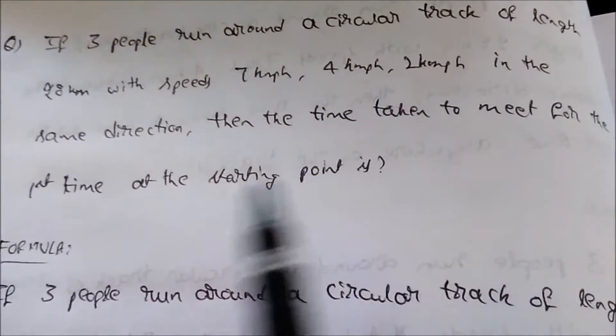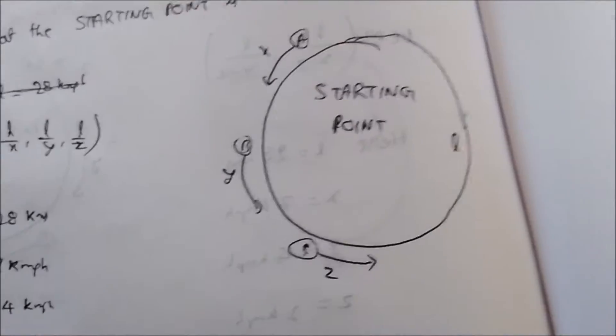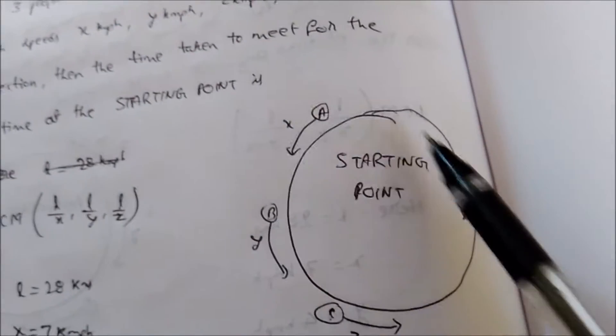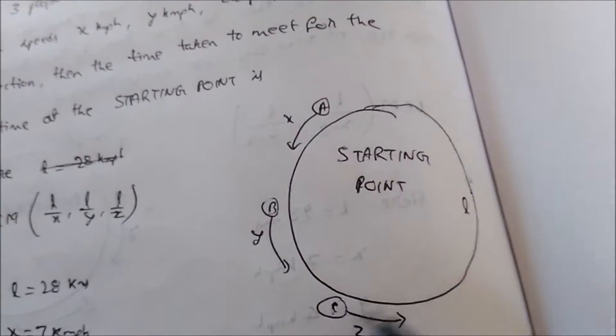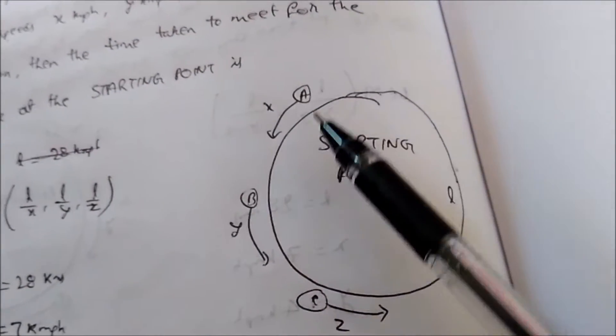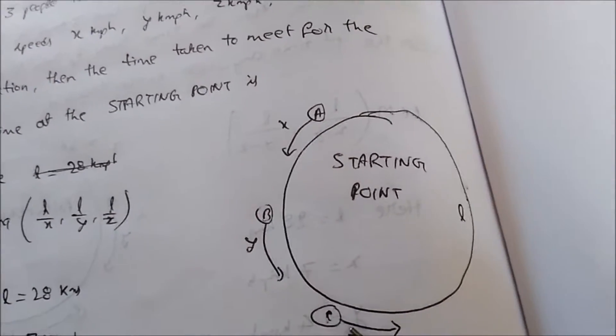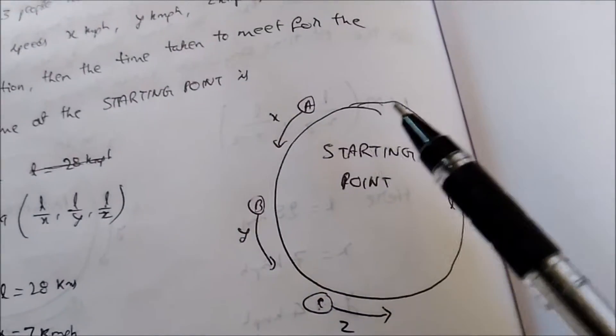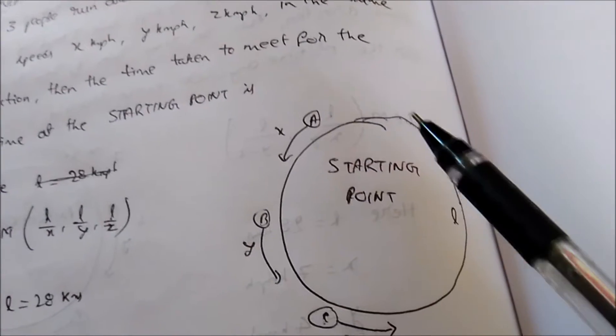The question is very simple. Here there is a circular track of length 28 kilometers and three people are running around this circular track in the same direction with speeds 7, 4, and 2 kmph. Now we need to find out the time taken for these three people to meet at the starting point for the first time.